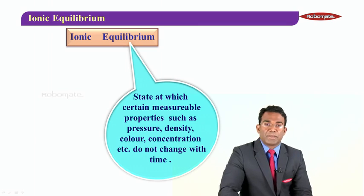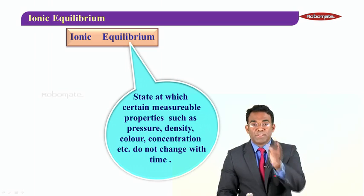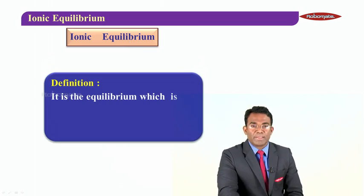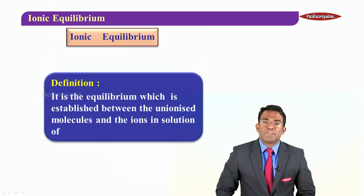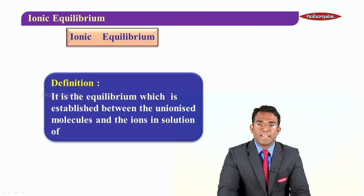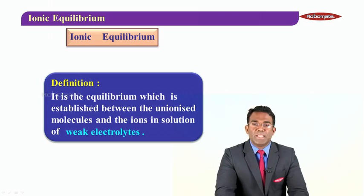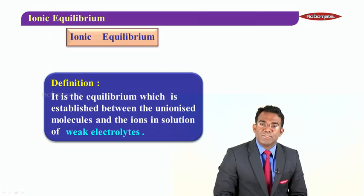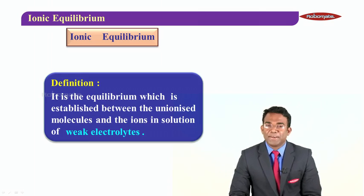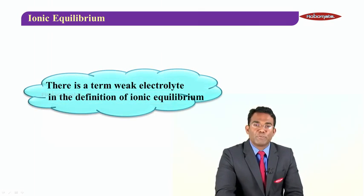We already covered that in the previous chapter called chemical equilibrium. Now I'm going to associate equilibrium with the term ionic. Joining these two, the definition of ionic equilibrium is: it is an equilibrium which is established between the unionized molecules and the ions in a solution of a weak electrolyte. There is one key term there — weak electrolyte — in the definition of ionic equilibrium.